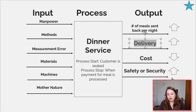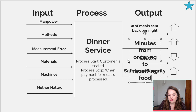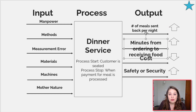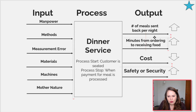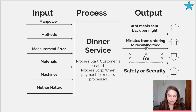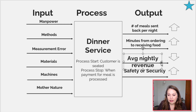For delivery, maybe for our customers in dinner service, that's the minutes it takes from ordering to receiving food. We don't know how many minutes that is yet because we haven't gone and got the data, but that might be something we want to go get. For cost, maybe this is the average nightly revenue. If we got that for each night, we would be able to see over time how that process is performing.